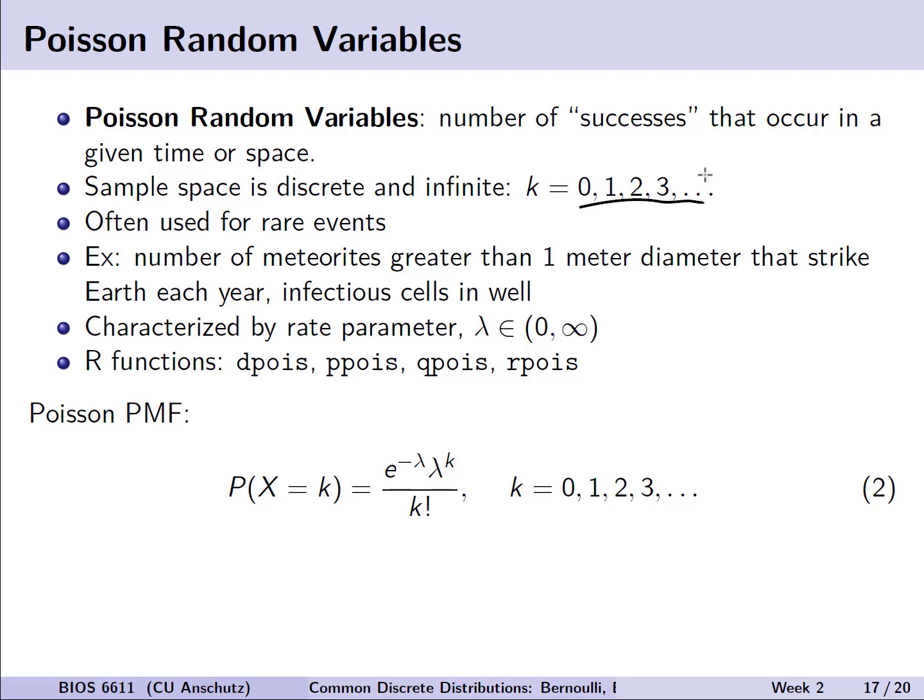The Poisson random variable is often used to describe rare events. For example, the number of meteorites greater than 1 meter in diameter that strike Earth each year, or the number of infectious cells in a well.